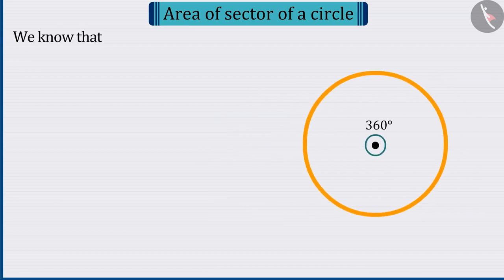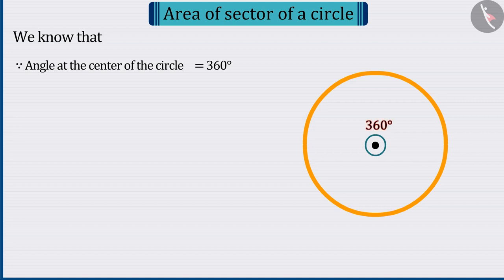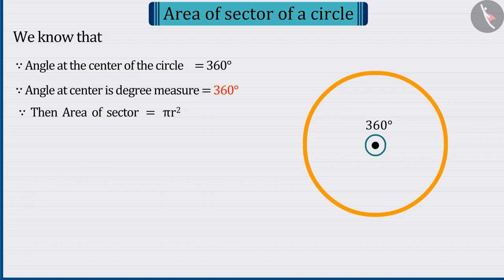Now, we know that at the center of the circle, the sum of the total angles is 360 degrees, so its degree measure is 360. Hence, the area of the circle can be considered as a sector whose area is pi r square.